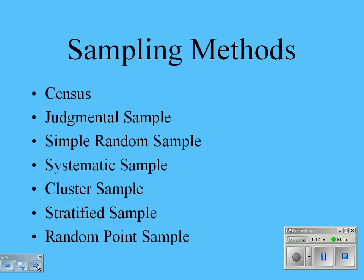A systematic soil sample might involve making a grid out of the field and taking a sample at regular intervals. A cluster sample with the same example involves randomly picking a couple of points and then choosing the immediate square yard right around that point.